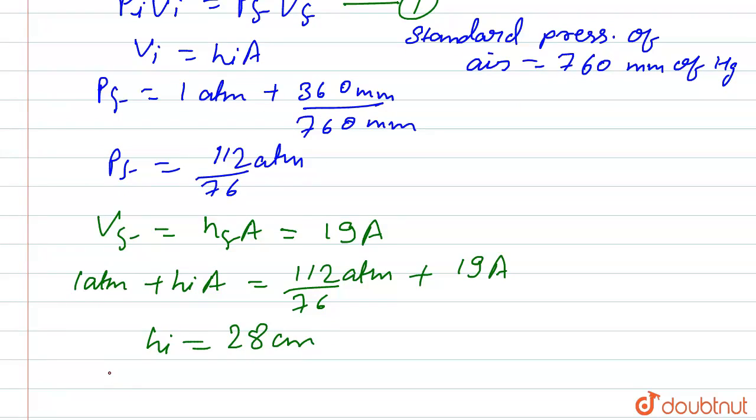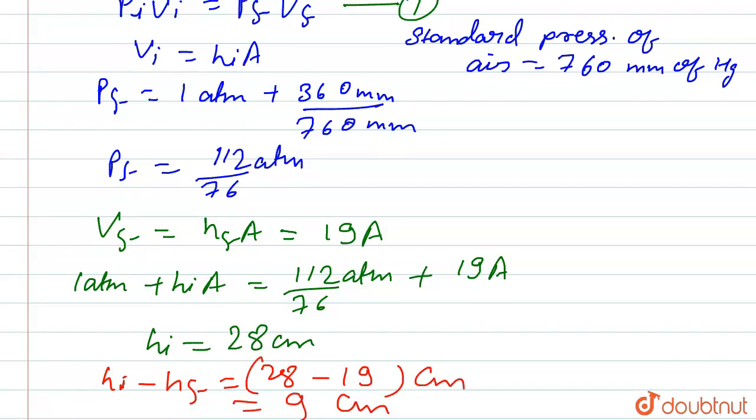But we have to calculate h_i minus h_f, so here h_i is 28 cm and h_f is 19 cm. So h_i minus h_f is equal to 28 minus 19 cm, so our answer is 9 cm, which is the length